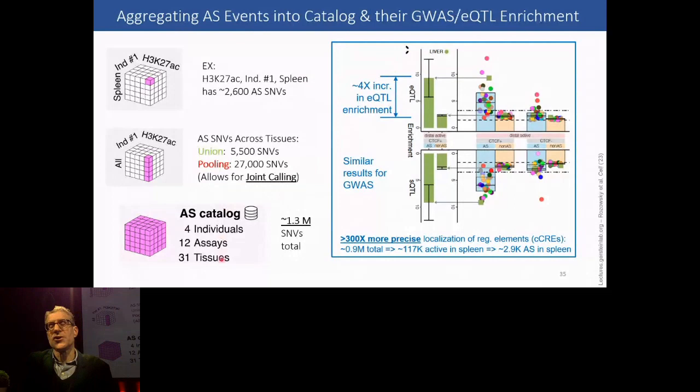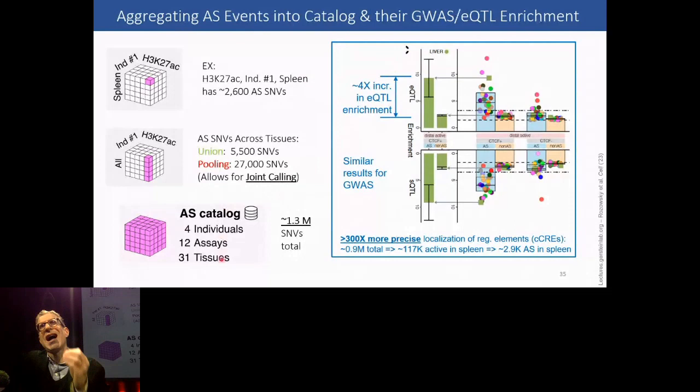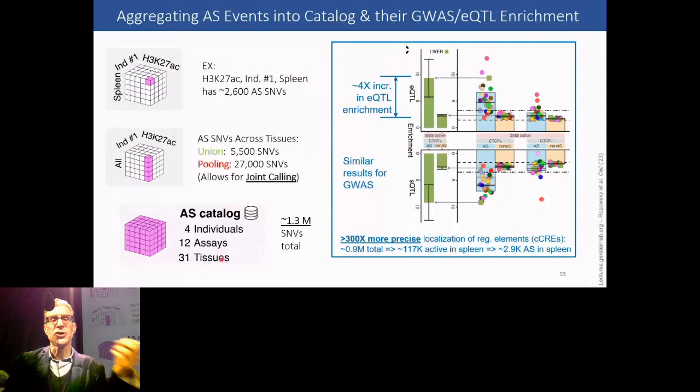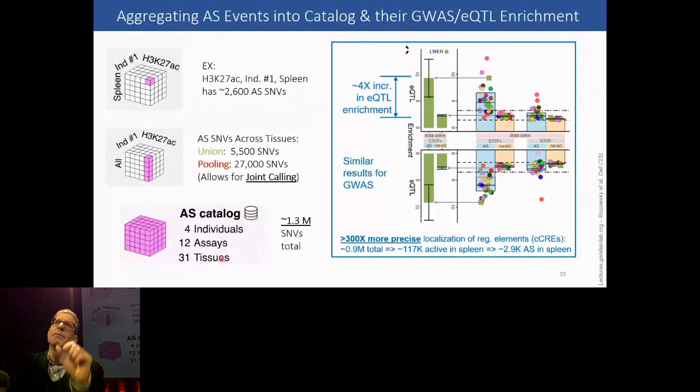You can find lots of allele-specific elements in the genome, and these are highly enriched in eQTLs but also in GWAS loci. If you take all the regulatory elements ENCODE found — about a million in the genome — and look at the allele-specific elements active in a particular tissue, it's much smaller — only about 3,000. So you have a 300-fold enrichment in terms of finding the elements where your disease variant may be located.